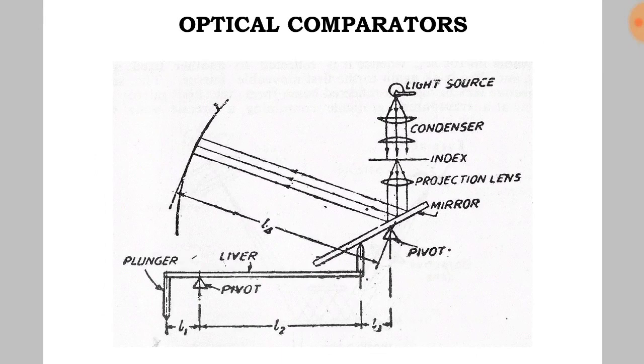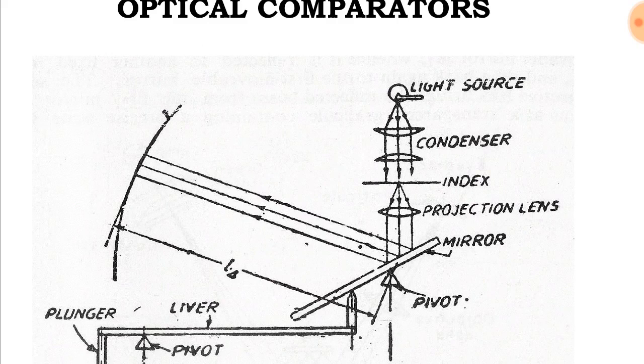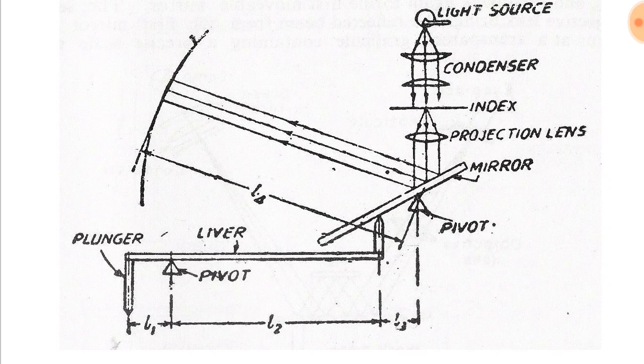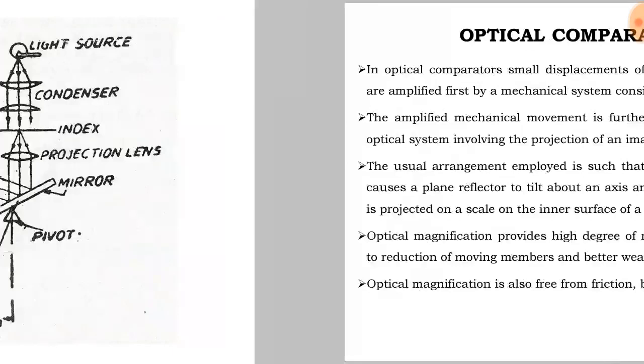This diagram shows the optical comparator. A light source falls on the condenser and to the index and projecting lens and the mirror. Small displacements can be detected from this optical comparator.